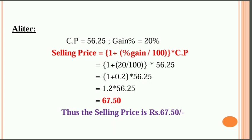Here is the key formula. If there is a gain: SP equals 1 plus gain% divided by 100, into CP. If there is a loss: SP equals 1 minus loss% divided by 100, into CP. New value equals 1 plus the percentage as a decimal, into the original value. For example, 5% increase gives 1.05 into original value. An increase uses plus, a decrease uses minus.